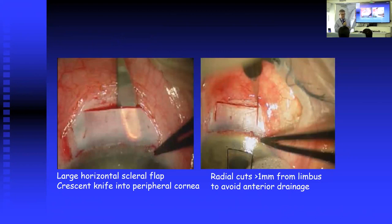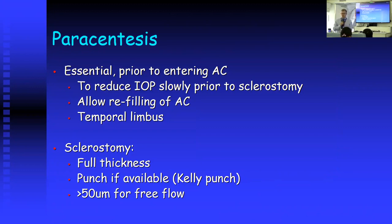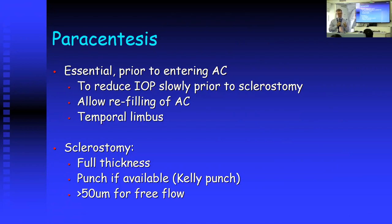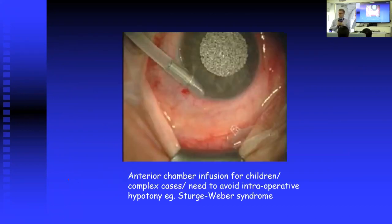You can see in this congenital glaucoma eye there's a very large scleral flap. The radial incisions don't extend to the limbus — again, this is to avoid drainage at the limbus and prevent anterior blebs. Before entering the eye, before performing the sclerostomy, it's important to perform a paracentesis. This allows you to reduce the IOP gradually and also allows refilling of the anterior chamber if the pressure falls dramatically. To make the sclerostomy we generally use a punch — a Kelly punch is usually about 500 microns.